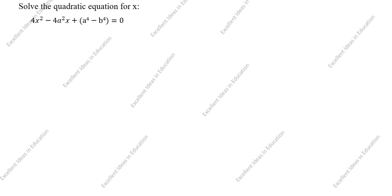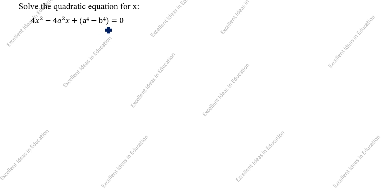Hi students, welcome to my channel Excellent Ideas in Education. Today we are going to solve this quadratic equation problem: solve 4x² - 4a²x + (a⁴ - b⁴) = 0 for x.